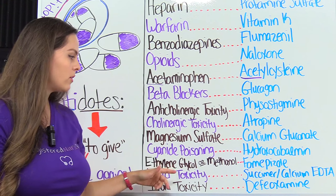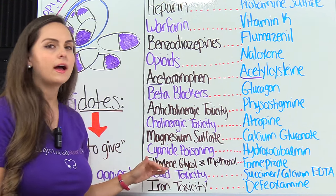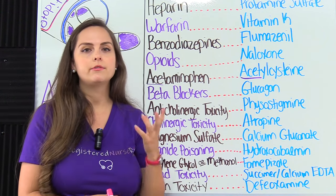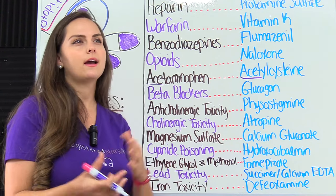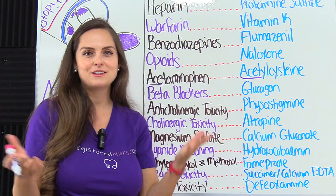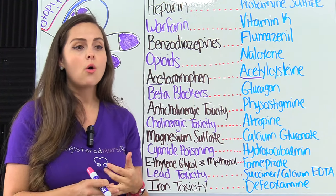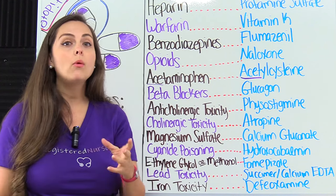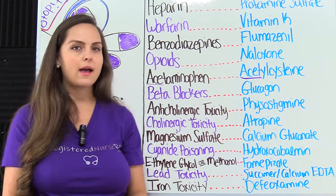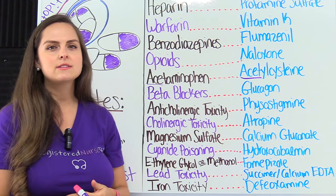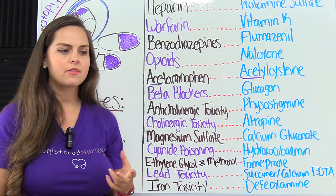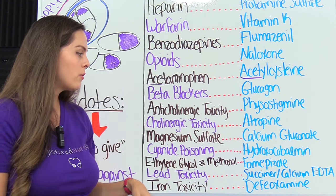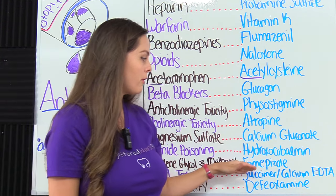Then we have ethylene glycol or methanol. Ethylene glycol is found in antifreeze and methanol is found in windshield wiper fluid. You might wonder how a person would get too much of this — they could accidentally ingest it, intentionally ingest it such as in a suicide attempt, or be poisoned with it. If you've watched forensic shows, there are many cases of poisoning with antifreeze. The antidote for these is fomepizole.